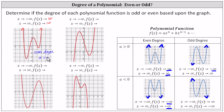Now let's jump down to this last graph. Notice for both the left- and right-hand behavior, in this case, f of x decreases without bound and approaches negative infinity. This indicates the polynomial has an even degree, but now a is negative or less than zero.